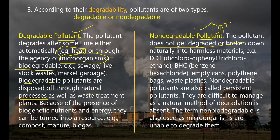Examples of non-degradable pollutants include DDT — full name Dichloro-Diphenyl Trichloro-Ethane — BHC (Benzene Hexachloride), empty cans, polythene bags, and waste plastics. These pollutants only pollute the environment and cannot be turned into useful resources like manure or biogas. Non-degradable pollutants are also called persistent pollutants.